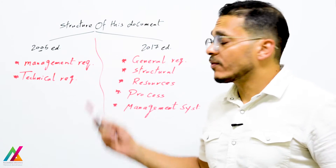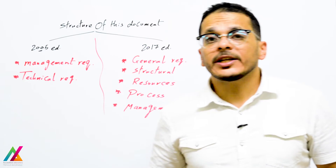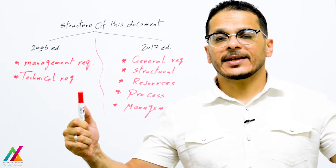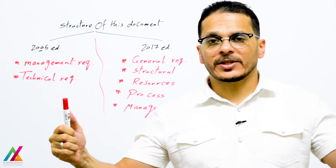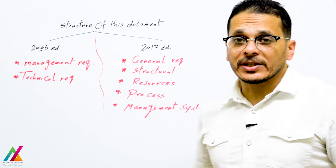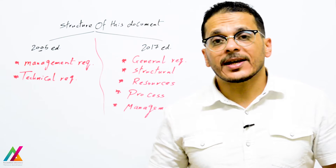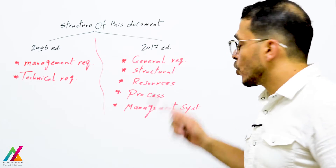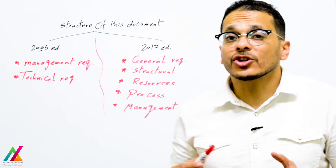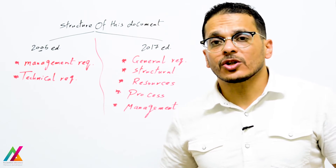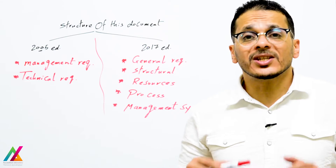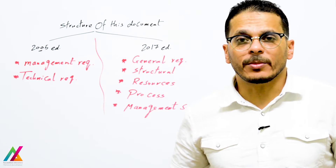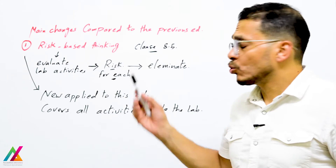Regarding the structure of the document: in the 2005 edition it was divided into only two parts — management requirements and technical requirements. In the 2017 edition there are more parts: general requirements, structural requirements, resources requirements, process requirements, and management system requirements.